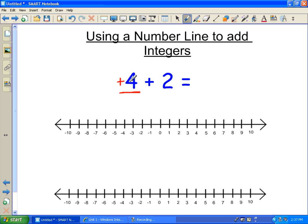For example, this is plus 4 plus a positive 2. So it is a positive 4 and a positive 2.